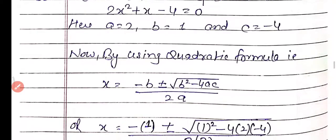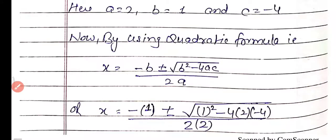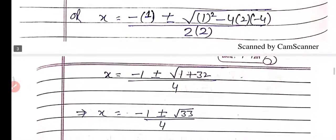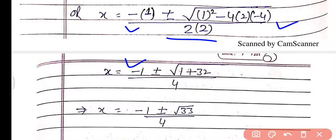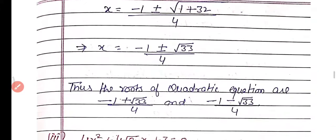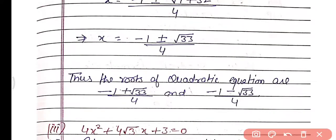Putting all the values: x = (−1 ± √(1² − 4 × 2 × (−4))) / (2 × 2) = (−1 ± √(1 + 32)) / 4 = (−1 ± √33) / 4. This implies either x = (−1 + √33) / 4 or x = (−1 − √33) / 4. These are the required roots of the quadratic equation.